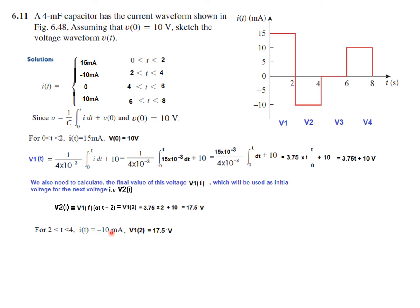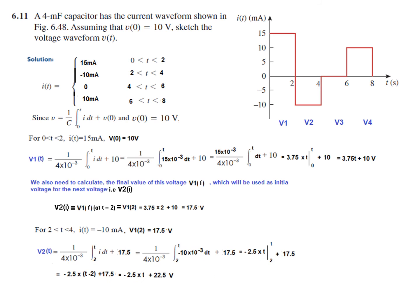From 2 to 4, the current is −10 mA and the initial voltage is 17.5 V. Using the same formula with limits from 2 to T and plugging in I = −10 mA and the initial voltage of 17.5 V, solving gives us the general equation for V2.